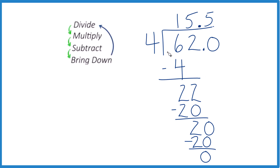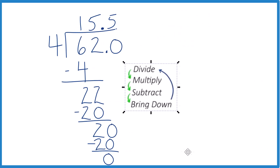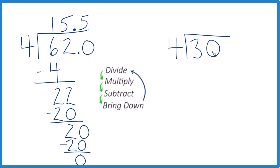And you subtract — 0, no remainder. You're done. So 4 goes into 62, 15.5 times. 4 times 15.5 is 62, if you want to check your work. So pause and give this a try — divide 30 by 4 using long division.